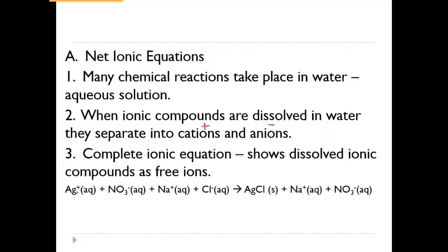For example, silver nitrate — because it has aqueous behind it — dissolves in water, giving us Ag⁺¹ and NO₃⁻¹. Notice it dissolves into its ions, and you need to write the charge with every single one. Silver chloride, however, is not written as individual ions because it forms a solid — a precipitate. When we have a precipitate it doesn't dissolve into ions; only aqueous substances do.